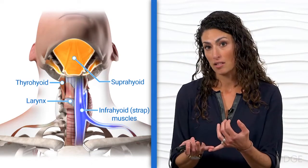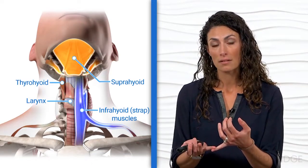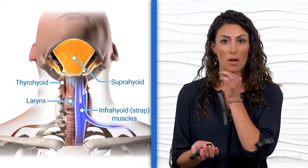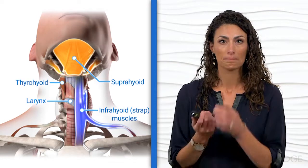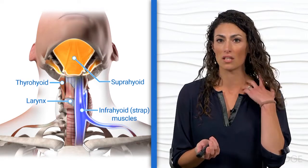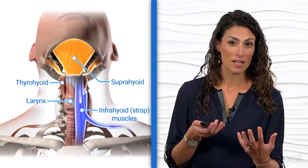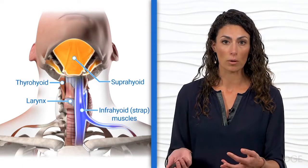Is the thyrohyoid space present or absent? Is there suprahyoid or submental tension above the hyoid bone in the base of tongue? And is there tension in the strap muscles? The presence or absence of tenderness in these areas gives us further insight into what we're feeling.